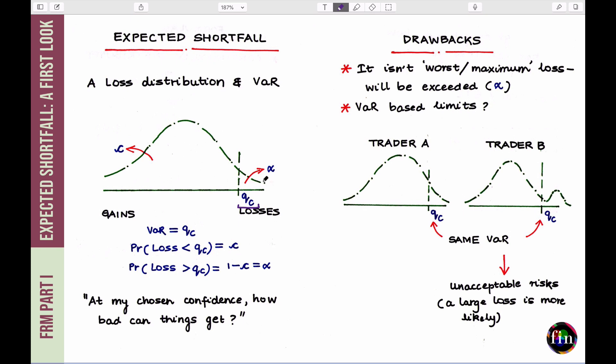That number QC, we refer to that number as the value at risk or VAR estimated at a confidence C. So if you take a look at what this number QC means, mathematically speaking, then it just means that the probability that your loss will be less than QC is C.